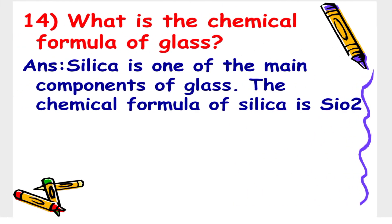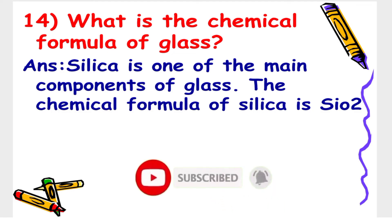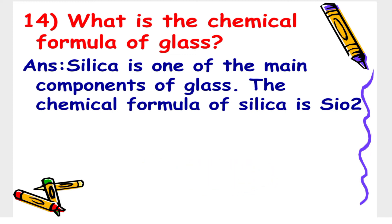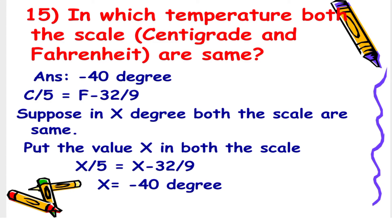Next: What is the chemical formula of glass? The answer is silica is one of the main components of glass. The chemical formula of silica is SiO₂. Next: At which temperature are both the Celsius and Fahrenheit scales the same? The answer is minus 40 degrees.